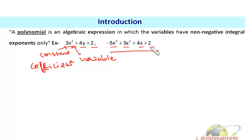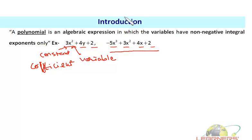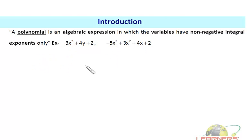I hope you are clear with the basic terminologies of algebraic expressions — you have already done these in your previous classes. Now let's begin with what's a polynomial. A polynomial is an algebraic expression in which the variables have non-negative integral exponents. For example, 3x² + 4y + 2 is a polynomial — the variable x carries the power 2, and y carries the power 1.